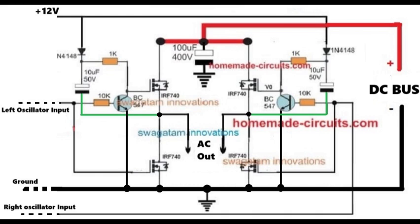However, as soon as the MOSFET drain voltage reaches its source terminal and exceeds its gate voltage of 12V, the conduction stalls. This is because, ideally, for any MOSFET to conduct, its gate potential must be around 10 volts higher than its source voltage.